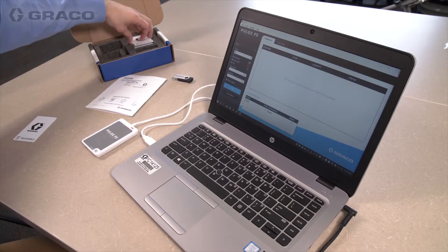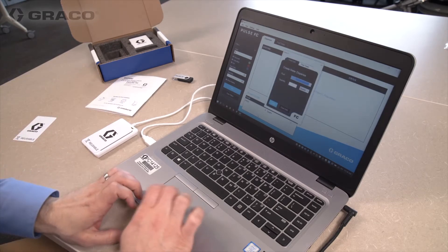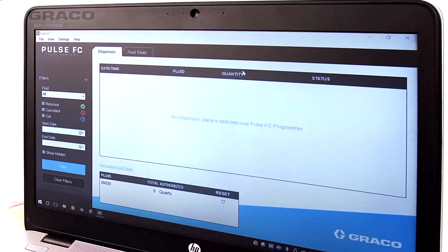If you want to simply adjust the K factor, place a blank fluid card on the Pulse FC programmer. Next, in the Pulse FC software, choose Settings, scroll to Setup, and finally click on Calibration.